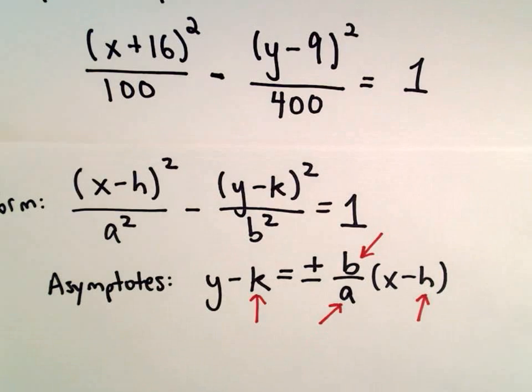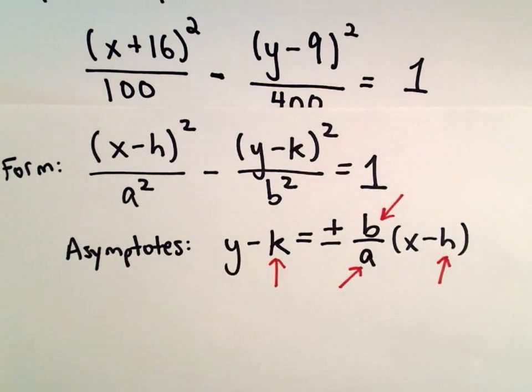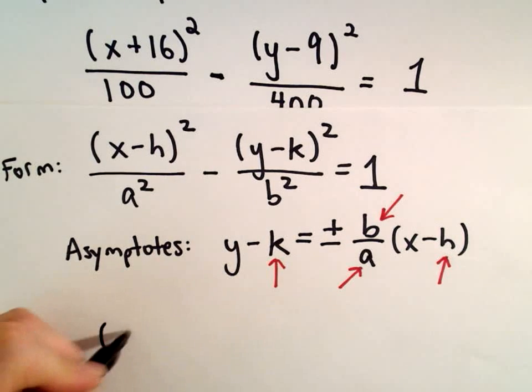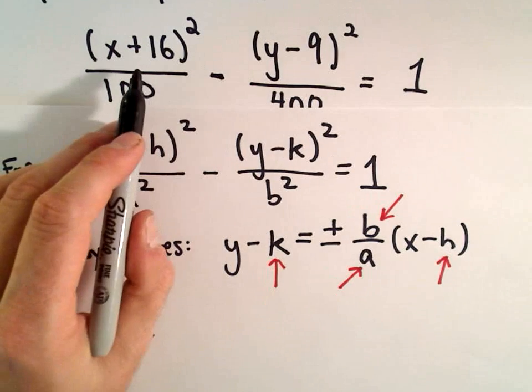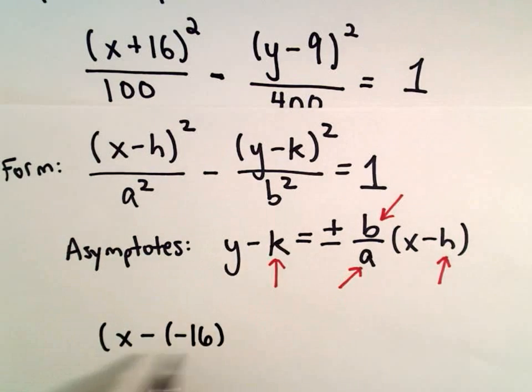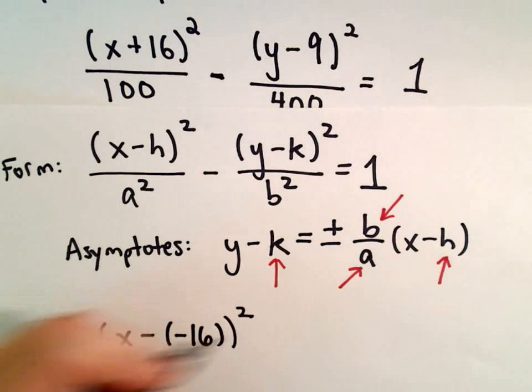Let's do that. I can rewrite this. We're going to write it as x minus something. We want it to be equivalent to x plus 16, so we can write it as x minus negative 16, squared.